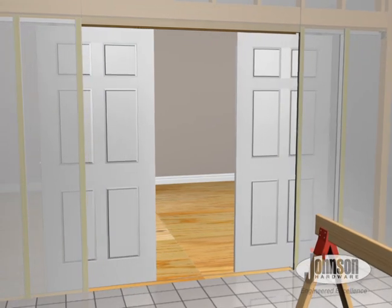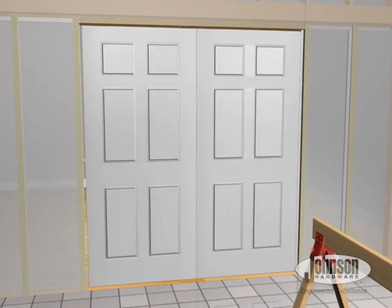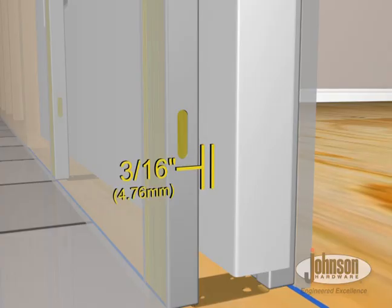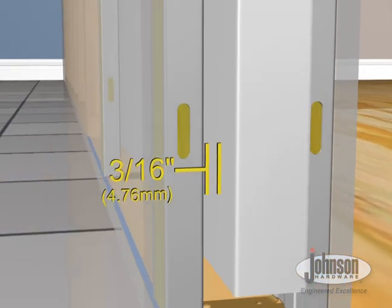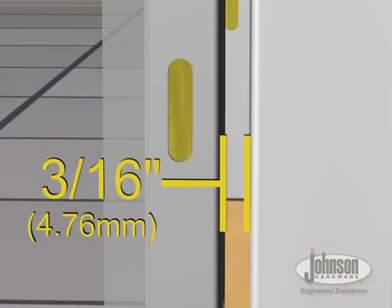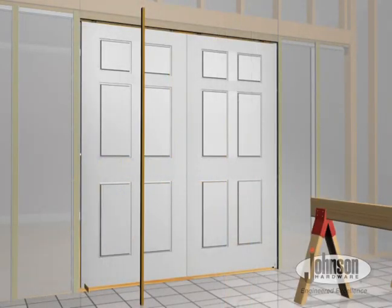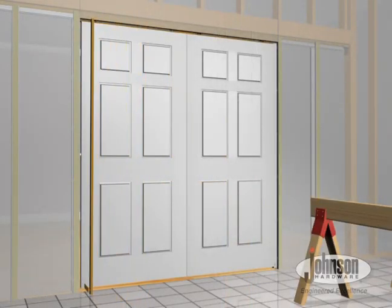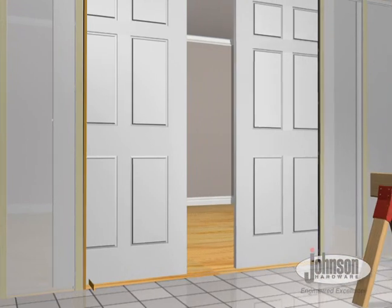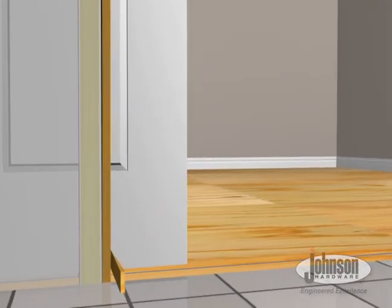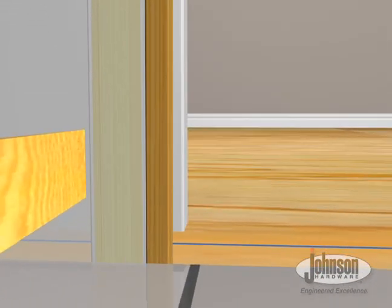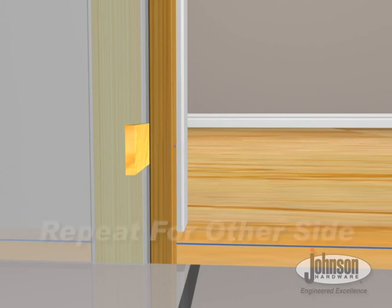Please note, you'll need a minimum of 3 sixteenths of an inch clearance between jam and door. Next, to plumb doors with jam, slide the doors open. With a shim in place, plumb finished split jam trim with edge of door.